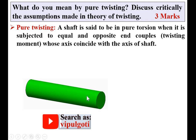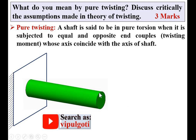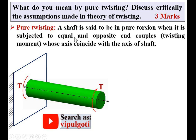Say for example, this is the shaft having one end fixed — this is the symbol for the fixed end and this is the free end. This is the axis of the shaft, and now it is subjected to the twisting moment T, so that it will be the reaction at the fixed end. A shaft is said to be in pure torsion when it is subjected to equal and opposite — here you can see equal magnitude T and T but in opposite nature.